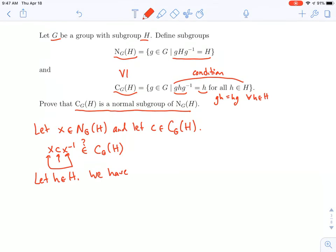So if h is in H, then we have xcx inverse, h, and then xcx inverse, inverse. So I'm conjugating little h.